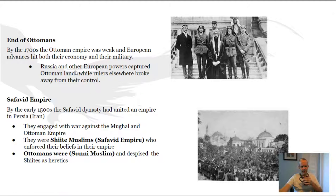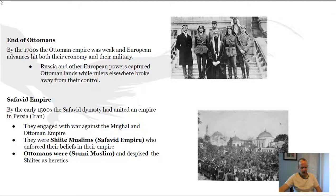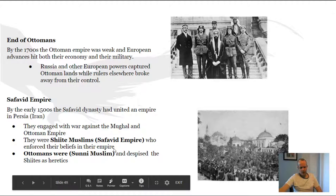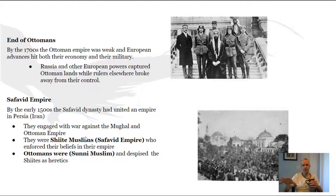Russia and other European powers captured Ottoman lands, and by World War I the Ottoman Empire was already declining. The Safavid Empire was in the 1500s and was basically Persia, which would be modern-day Iran. They were engaged in war against the Mughal and the Ottoman Empire. The Safavids were Shiite Muslims who enforced their beliefs on their empire, while the Ottomans were Sunni Muslims who basically despised the Shiites as heretics. The Ottomans were Sunni — any good Muslim — while the Safavid Empire was Shiite, meaning rule had to be in the bloodline, like the Shah in the Middle East.